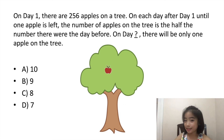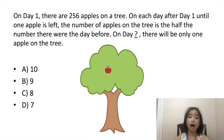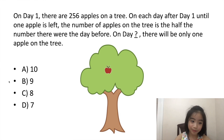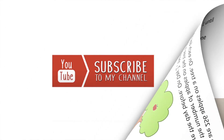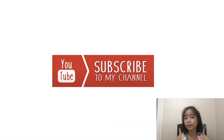From what we just found, we know that on day nine there will be only one apple on the tree. So the answer is B, nine. If you like this, please subscribe to my channel. Thanks for your support.